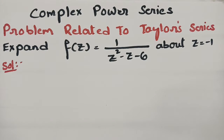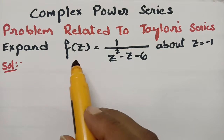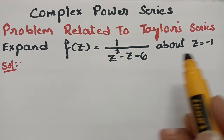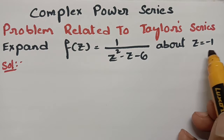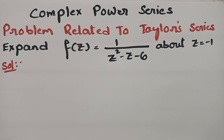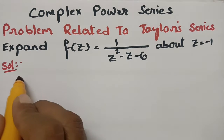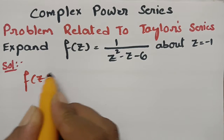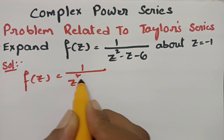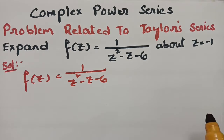Today's video is on a problem related to Taylor series. We have to expand f(z) = 1/(z² - z - 6) about z = -1. This problem is from complex power series, so we will use Taylor series for this expansion. Clearly from the question, f(z) is given as 1/(z² - z - 6).